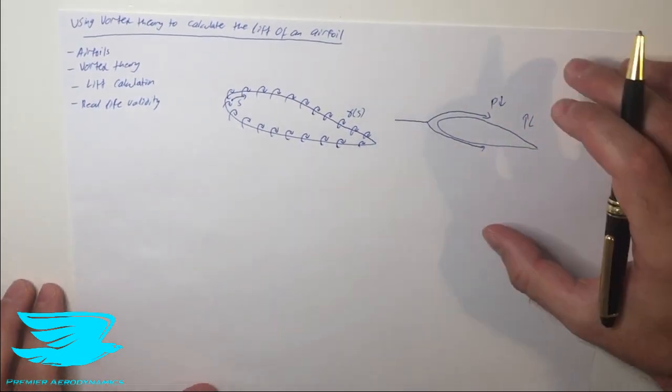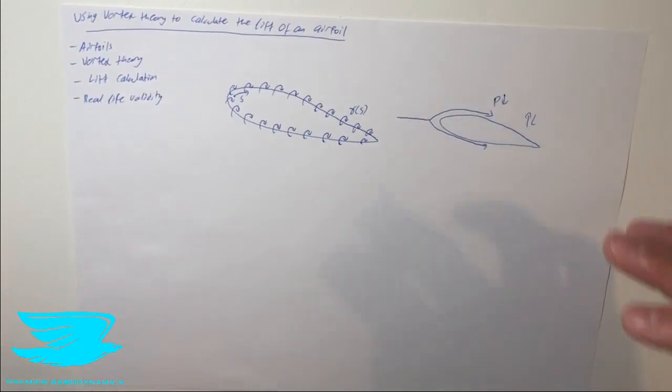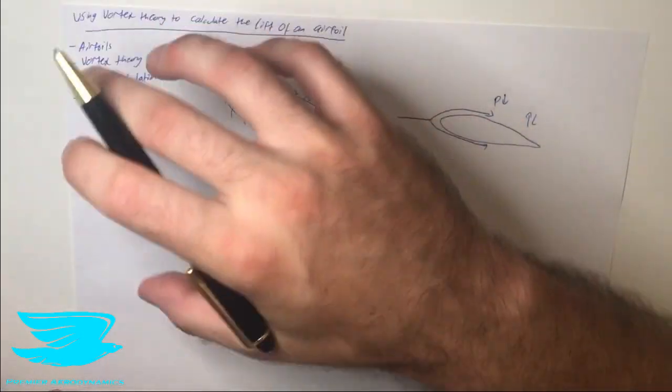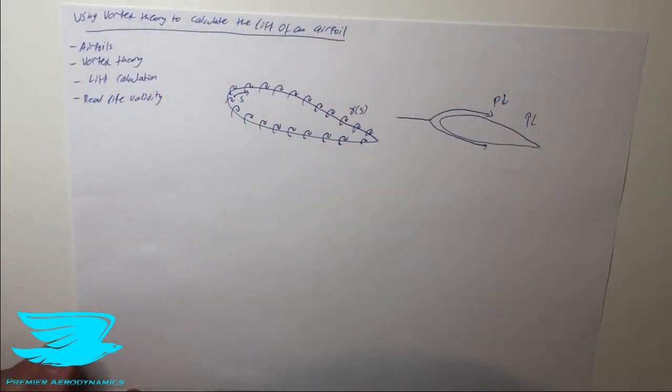And to calculate the lift of an airfoil is actually quite difficult if you don't really know the mathematics behind it. One way that we can do it is using vortex theory. So what does vortex theory say?